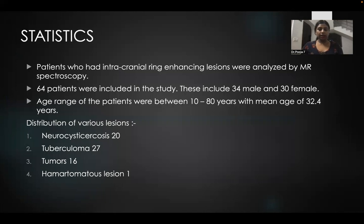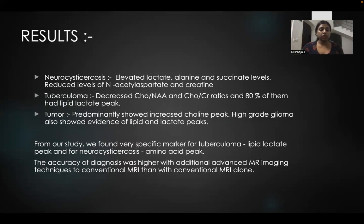64 patients with intracranial ring enhancing lesions were analyzed by MR spectroscopy, including 34 male and 30 female patients. Age range was between 10 to 80 years with a mean age of 32.4 years. Neurocysticercosis was seen in 20 patients, tuberculoma in 27 patients, and tumor in 16 patients. Neurocysticercosis showed evidence of elevated lactate, alanine, and succinate levels, with reduced levels of N-acetyl aspartate and choline. Tuberculoma showed decreased choline, N-acetyl aspartate, and choline-creatine ratios, and 80% predominantly had lipid lactate peak. Tumors predominantly showed increased choline peak.